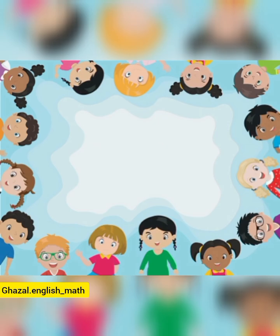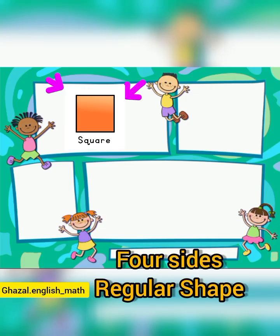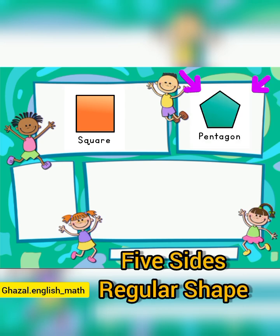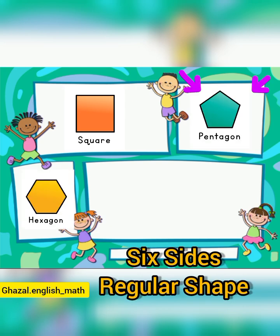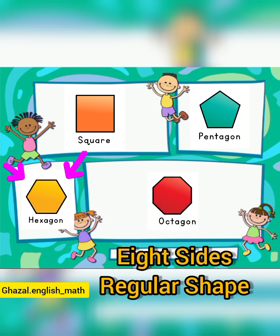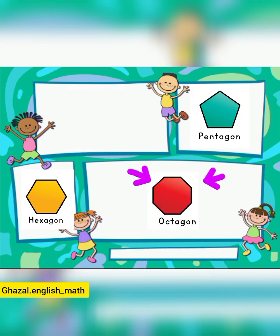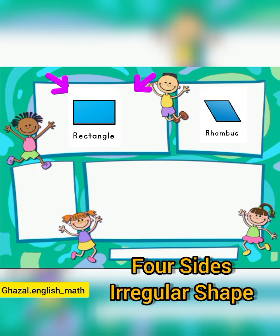Let's look at some examples. A four-sided regular shape: a square. A five-sided regular shape: a pentagon. A six-sided regular shape: a hexagon. An eight-sided regular shape: an octagon.